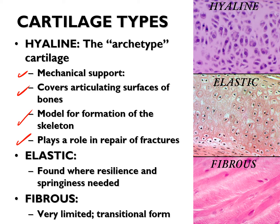Whenever there is a fracture in a bone, cartilage will first develop at the fracture site, and later this cartilage is replaced by bone. Elastic cartilage is found where resilience and springiness are needed. The last form, fibrocartilage, is very limited and is a transitional form. In fibrocartilage we have rows of bundles of collagenous connective tissue, and between them there are rows of chondrocytes.